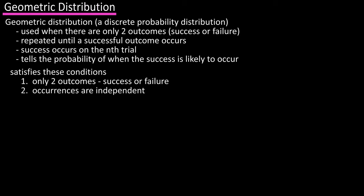Number two is that each outcome is independent of one another. Number three is the probability of success is the same for each trial and number four is that the experiment will continue until a success occurs.